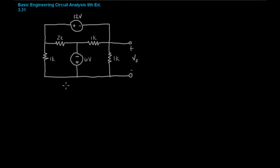Okay, let's take a look at example 331 from the homework set. We're being asked to solve for V0 in this circuit using nodal analysis. So let's apply our formal method.